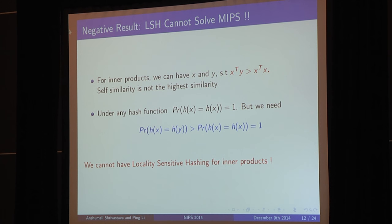Now that is what is a trouble with inner products. So for inner products, it is not difficult to find x and y, so that x transpose y is much greater than x transpose x. Yes, it's a little weird that self-similarity is not highest, but it's an important problem and we want to solve it. And suppose there exists a locality-sensitive hashing, say h, then under this hash function, I would like the h of x to agree with h of y with more probability as h of x with h of x. But that actually cannot happen because h of x is equal to h of x is an identity. So this is essentially the complete proof of why we cannot have a locality-sensitive hashing for inner products.